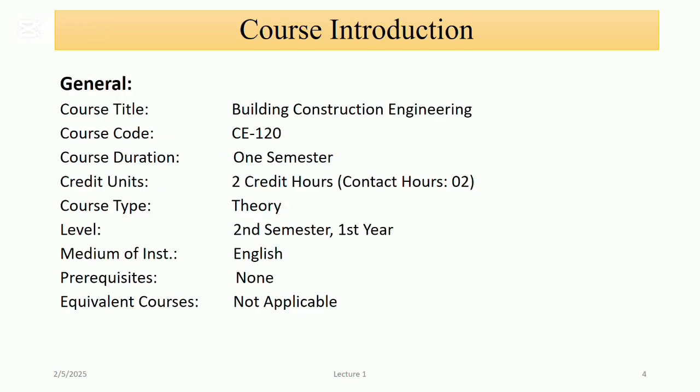General Course Introduction. The title of this course is Building Construction Engineering. The code of this course is C120 and the course duration is one semester. It is a two-credit hour subject, it is a compulsory subject, and it is taught in the second semester. The medium of instruction is English. No prerequisite course is required and there are no equivalent courses.